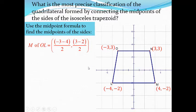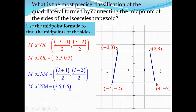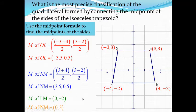Continuing to find the midpoints: the midpoint of one side is (0.5). The midpoint of side NM is found by adding x-coordinates (3 plus 4) divided by 2, and y-coordinates (3 plus negative 2) divided by 2, giving midpoint NM as (3.5, 0.5). Similarly, the midpoint of side LM is (0, negative 2), and the midpoint of side ON is (0, 3).